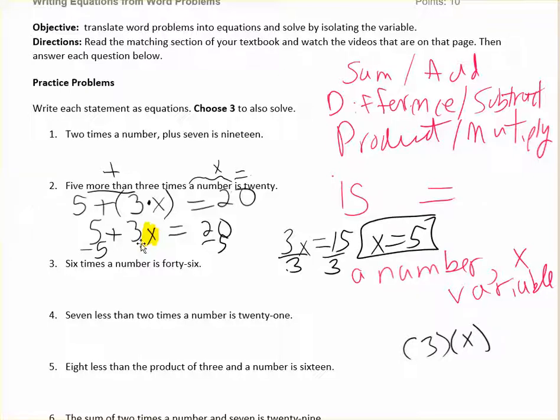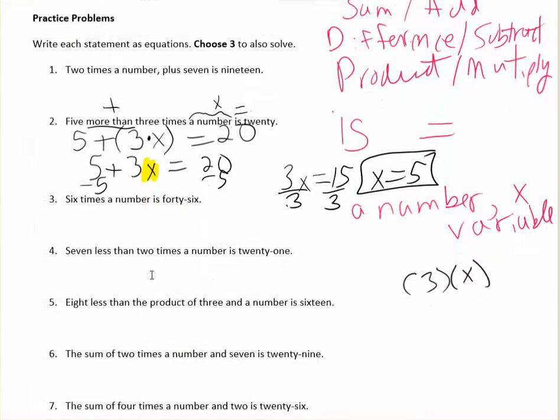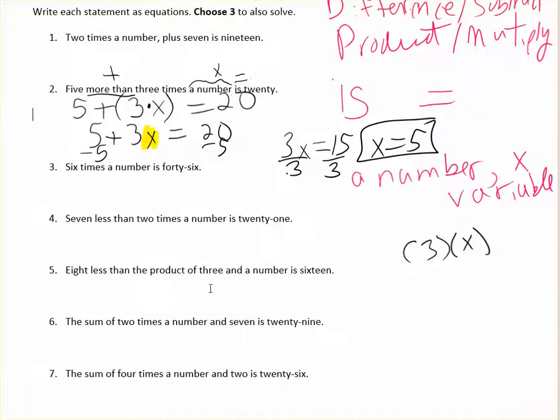So that's part of number two. You only have to solve three of them. You don't have to solve them all. For the other ones, the other seven problems, you're just going to write the equation. You don't have to solve for every one of them.